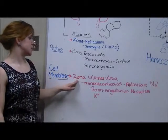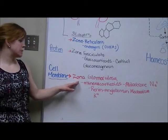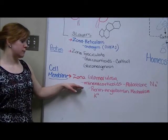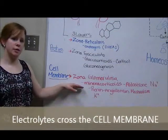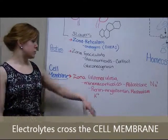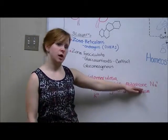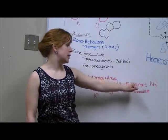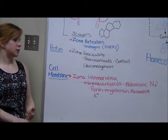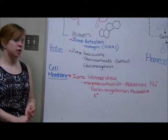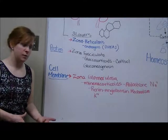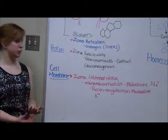The outermost layer is the zona glomerulosa. This is responsible for the release of mineralocorticoids, which are involved in the regulation of electrolytes and water balance within the body. One of the most powerful mineralocorticoids is aldosterone, which is involved with the blood pressure system. It causes increased thirst, vasoconstriction, as well as the resorption of sodium to increase blood volume, cardiac output, and therefore blood pressure.